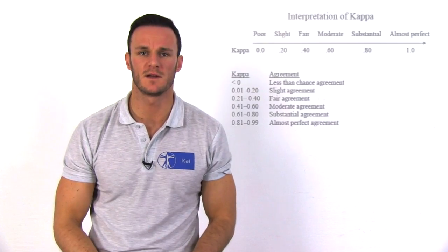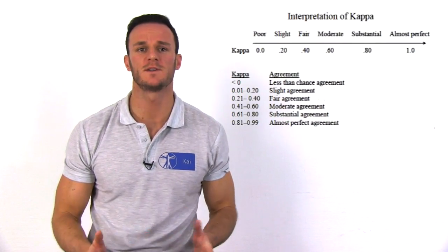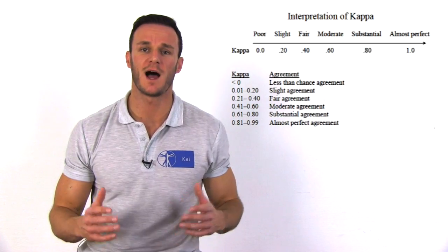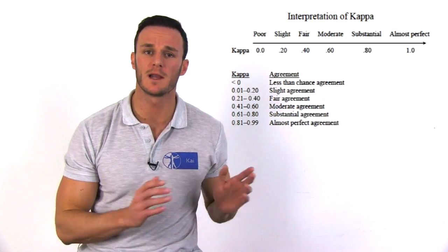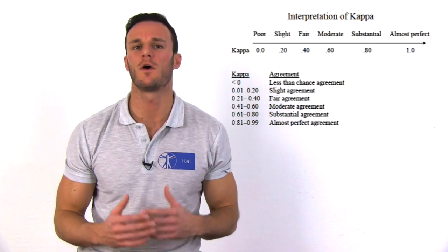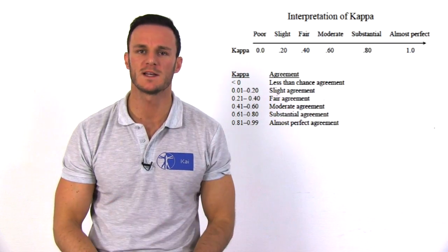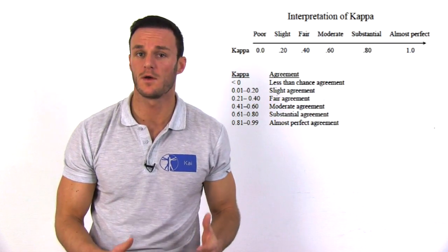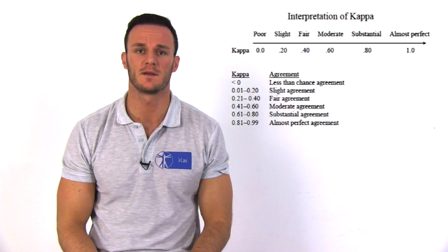So what does a Kappa value of 0.375 mean? According to the commonly used scale, this would mean that the two physios have a fair agreement on which patients are hypomobile and which ones are not. Note that a Kappa value of 0 or less means no agreement at all, while a value of 1 means perfect agreement.